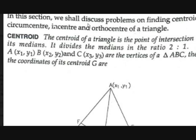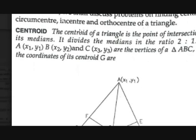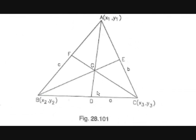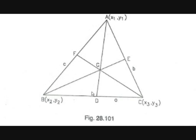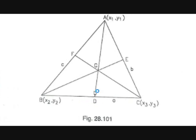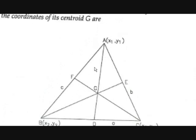Circumcenter is nothing but the intersecting point of perpendicular bisectors. As the name tells, bisector means the line bisects a side, and perpendicular bisector means it will be perpendicular to that side. The perpendicular bisector of BC passes through the midpoint of BC, which is D, and is perpendicular to the side BC. It will not pass through the other vertex but will be perpendicular to BC.